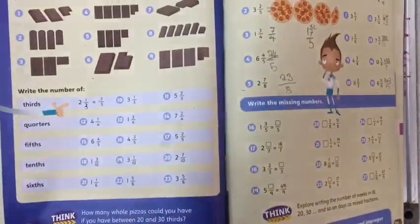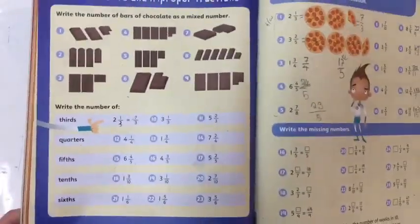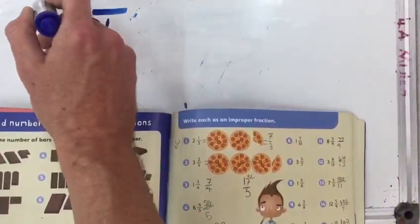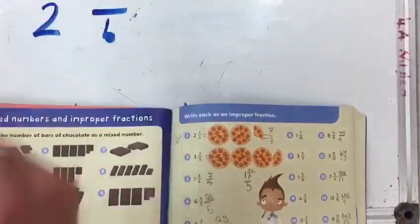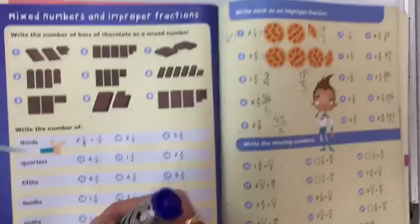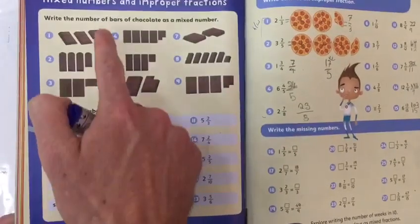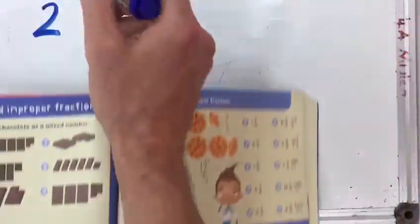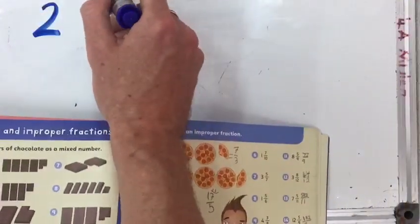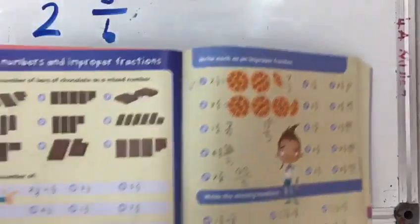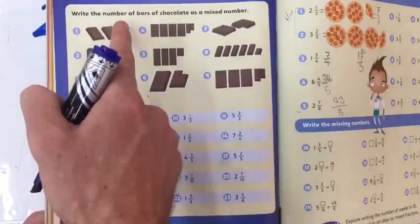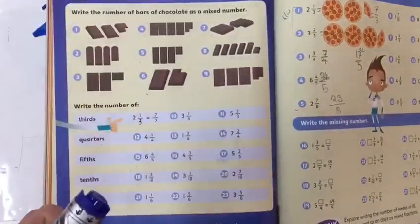We have to look at how many whole bars of chocolate we have, which is 2 whole bars. So we'll write down 2 because we have 2 whole bars. And we have 3 pieces out of 6 in the last bar, so our answer to number 1 is 2 and 3 over 6.